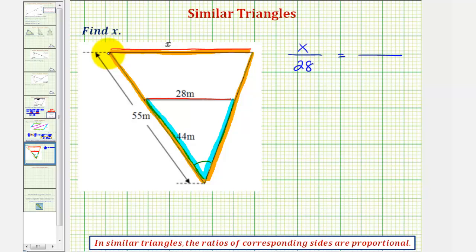Therefore the length of this side here, which is 55 meters, corresponds to this length here, which is 44 meters. So the second ratio would be 55 meters to 44 meters.